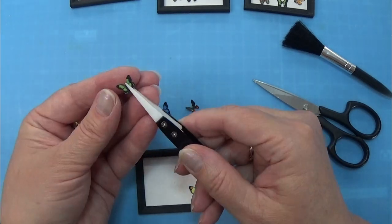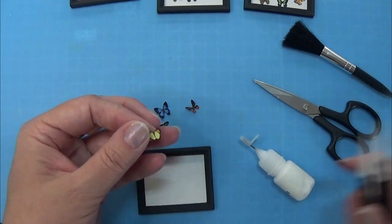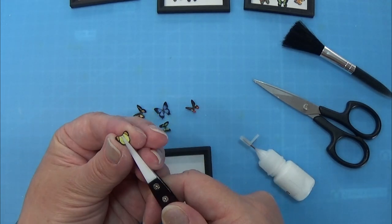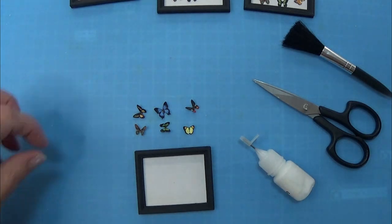I am using my tweezers here I place that on the middle of the butterfly and then I bend the wings up and this gives the butterflies a little more life when you place them in the frame.